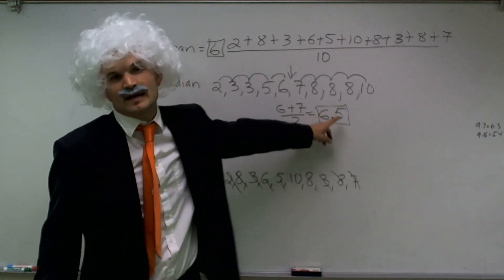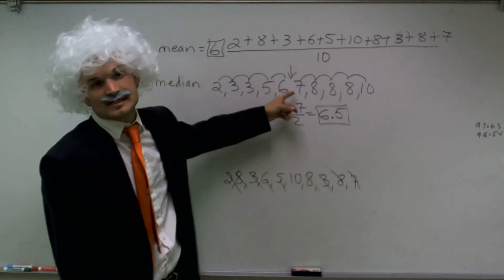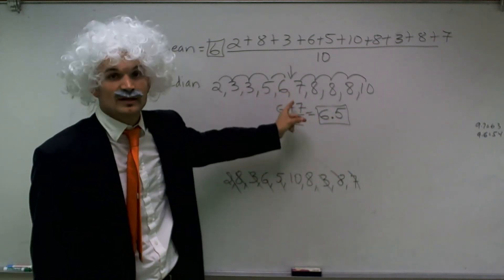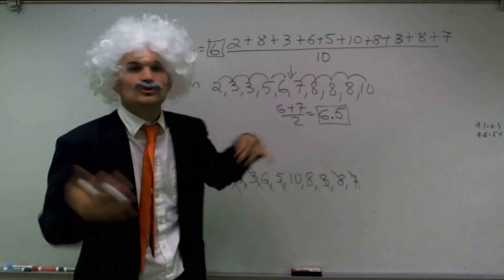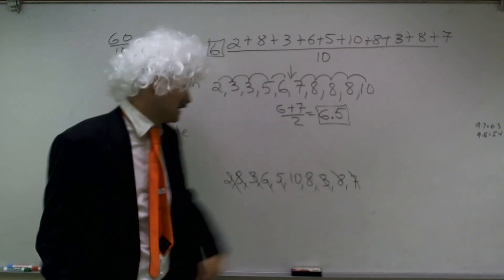And unless you have other instructions, we'll just leave it at that number, 6.5. Now, if you did have a single number in the exact middle, you could just use that as your median.